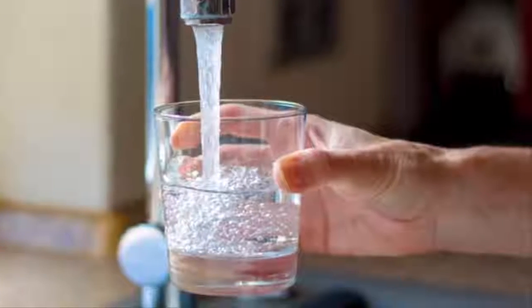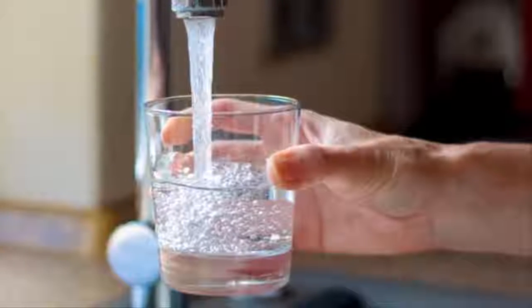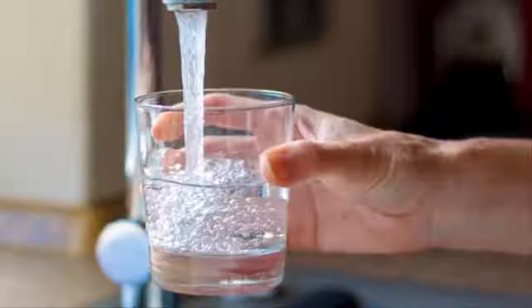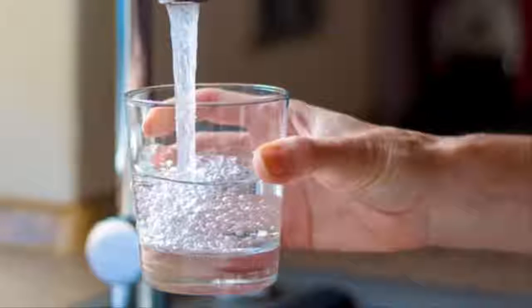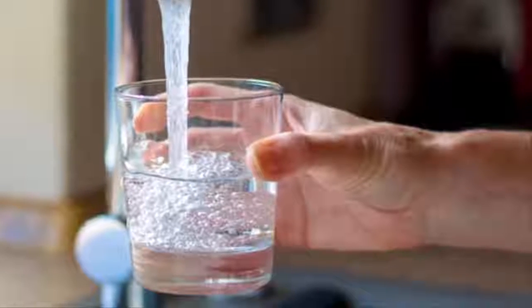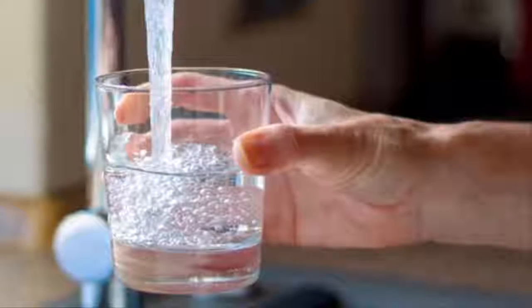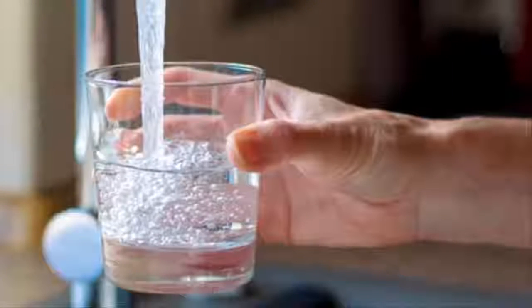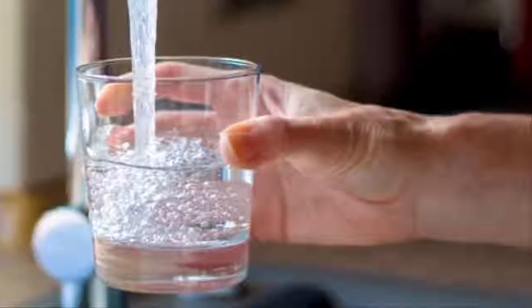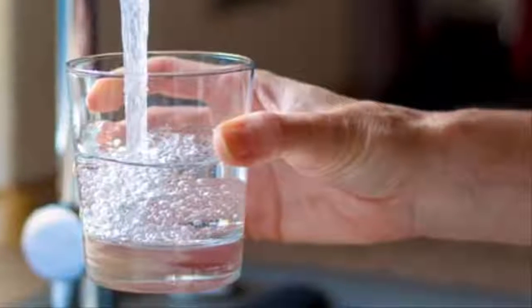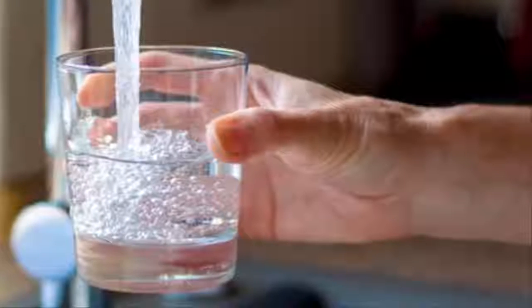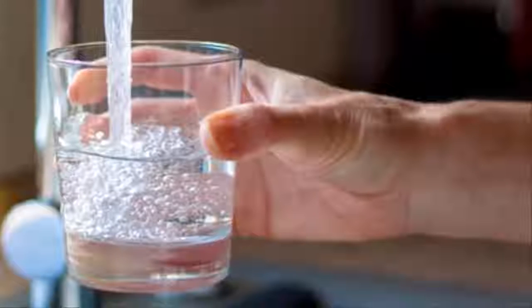Microplastic contamination has been found in tap water in countries around the world, leading to calls from scientists for urgent research on the implications for health. Scores of tap water samples from more than a dozen nations were analyzed by scientists for an investigation by Orb Media, who shared the findings with the Guardian.